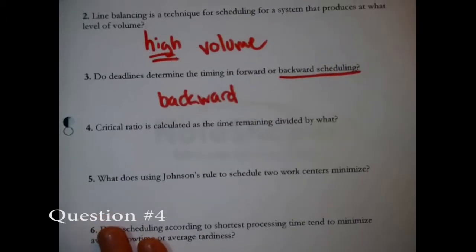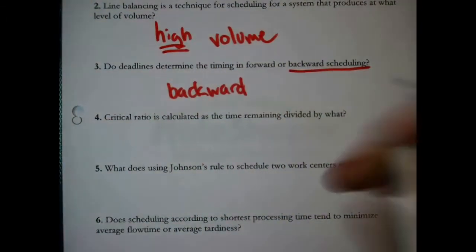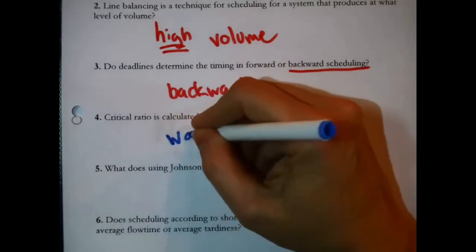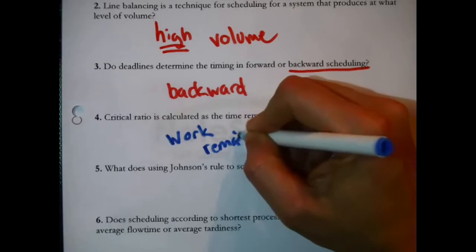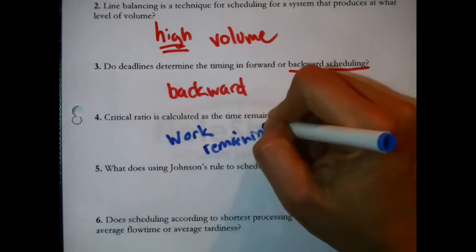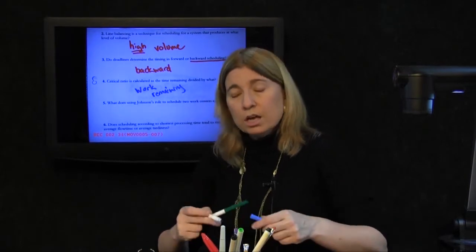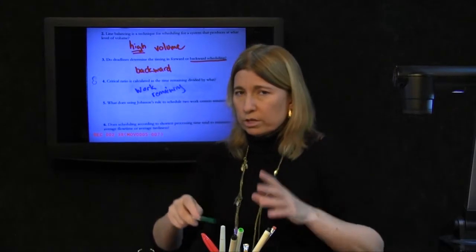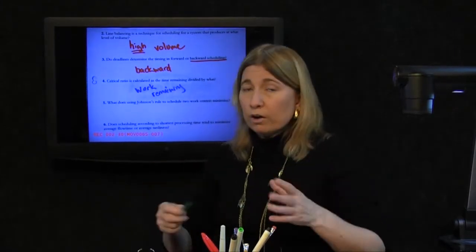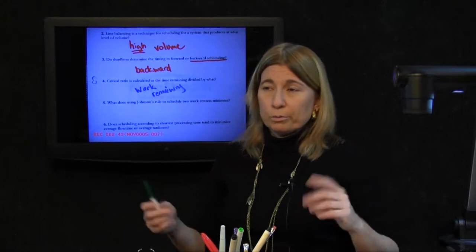Question 4: Critical ratio is calculated as time remaining divided by what? The answer is work remaining. Critical ratio is a score for something that needs to be done — it is always the time remaining until it is late, divided by however much work is remaining to be done on whatever we are evaluating.